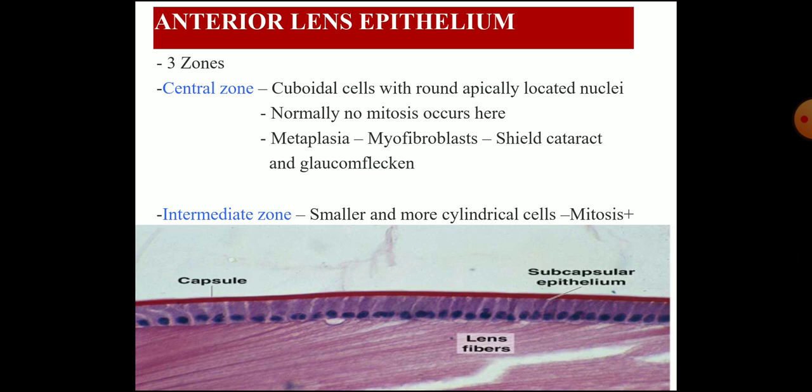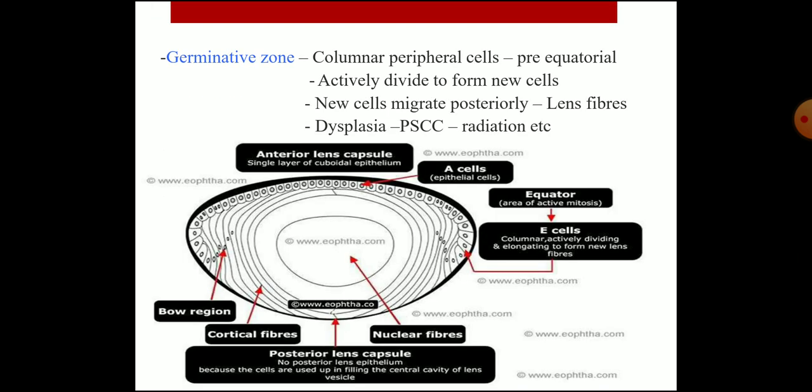The intermediate zone has smaller, more cylindrical cells where mitosis also occurs. The germinal zone consists of columnar peripheral cells; the pre-equatorial region actively divides to form new cells, which then migrate posteriorly to form lens fibers. Dysplasia of the posterior subcapsular cataract and radiation-related changes occur in these conditions. The various layers — lens capsule, nuclear fibers, cortical fibers, and bow region — can be seen in the diagram.